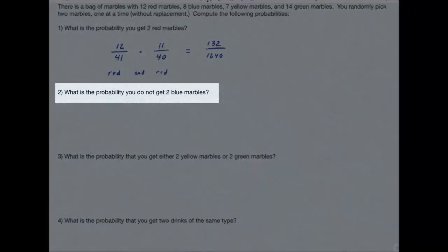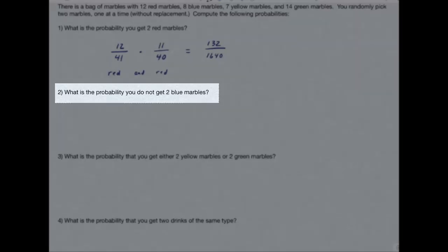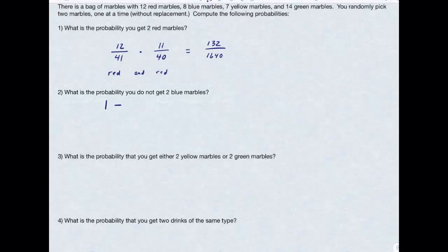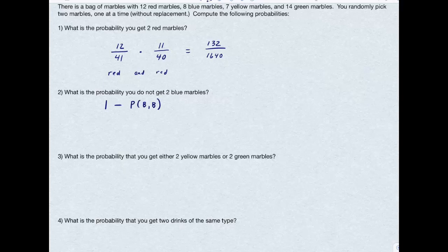However, the second one gets a little bit more complicated. There's two different ways of doing this. First of all, the probability I do not get blue marbles is simply equal to 1 minus the probability I do get two blue marbles. This is using the complement rule.